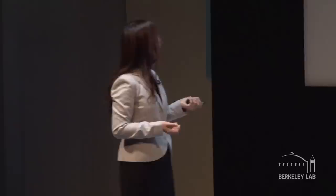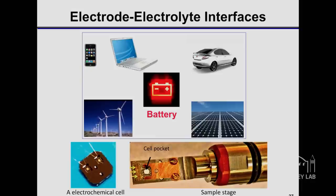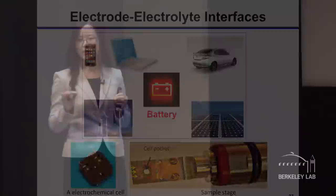Using the liquid cell, we can also address questions in real world issues, such as batteries. We can make a small battery cell by putting electrodes inside a liquid cell. Then we can monitor the electrode-electrolyte interfaces during charge and discharge using a transmission electron microscope. Then we can see how the battery works — and mostly, how does it fail.